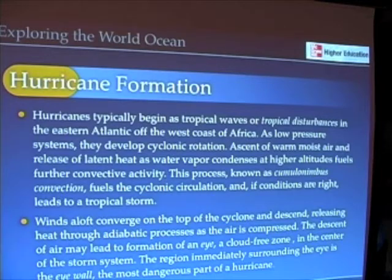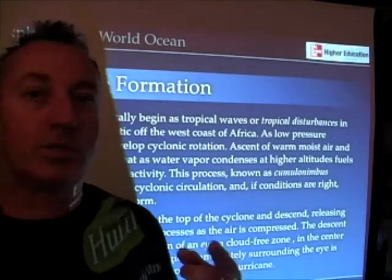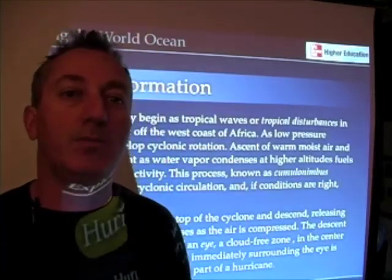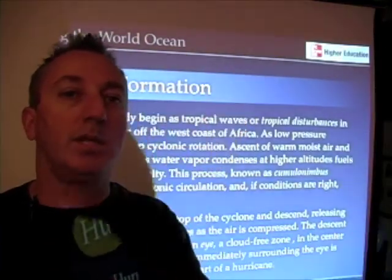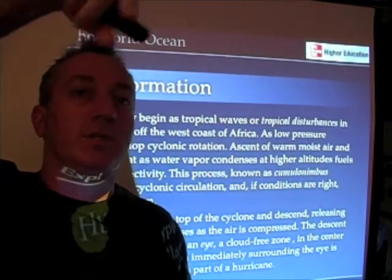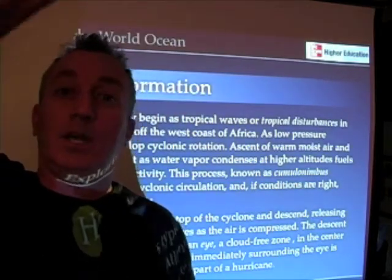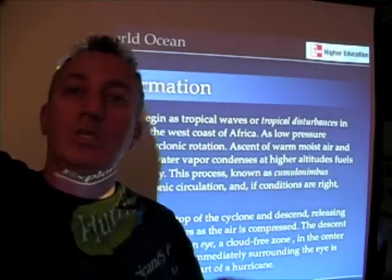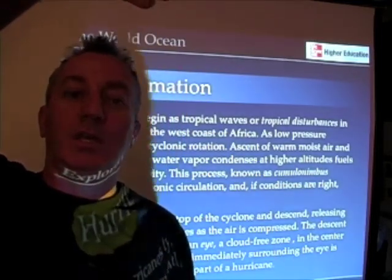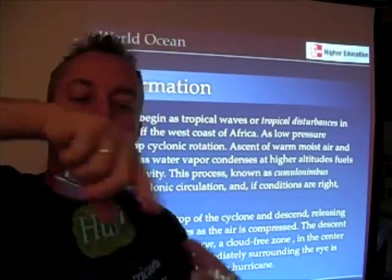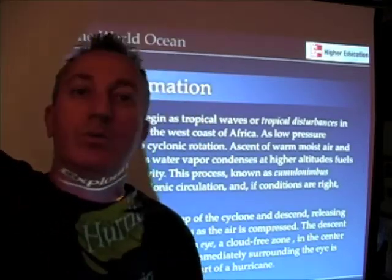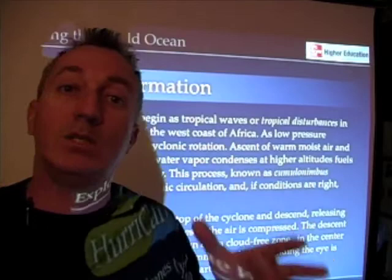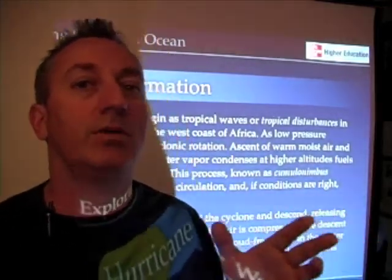Winds converging both at the top and bottom create different processes that contribute to hurricane circulation. One thing people don't realize is that a hurricane is a three-dimensional system — winds coming in at the surface, spiraling upwards, and moving outwards in the upper part. The upper hurricane circulation is just as important as the lower circulation. The three-dimensional movement of air is critical to its formation, intensity, and whether the hurricane persists.